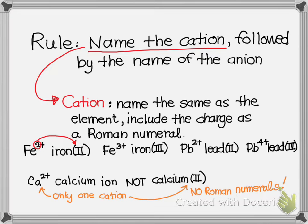I encourage you to use the reference ion periodic table as you're learning. When you see a formula with a transition metal or post-transition metal, look back at that reference chart to make sure you're not forgetting a Roman numeral. The anion is named like before: take the stem of the element name and change the ending to -ide.